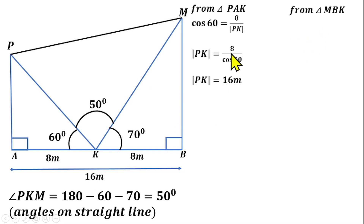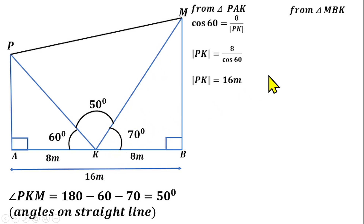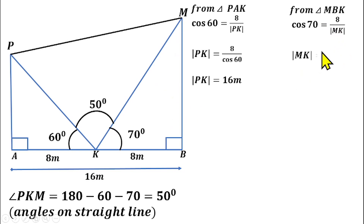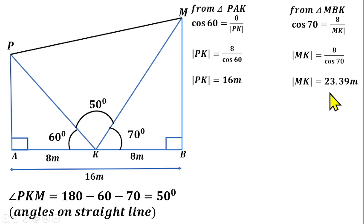From right-angled triangle MBK, we use cosine again: cos 70° = 8 over MK. Solving for MK gives MK = 8 over cos 70°, which simplifies to approximately 23.39 meters.